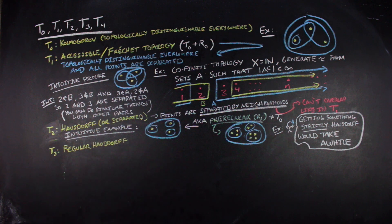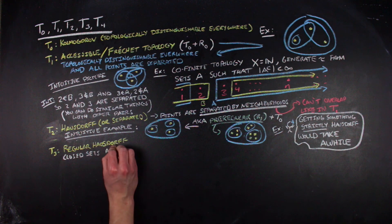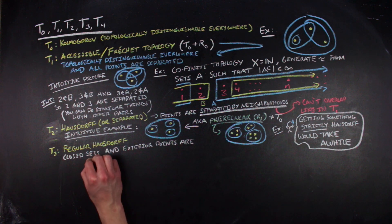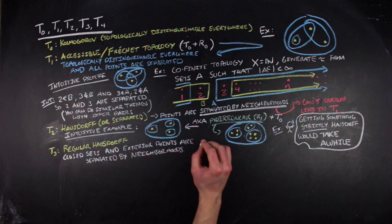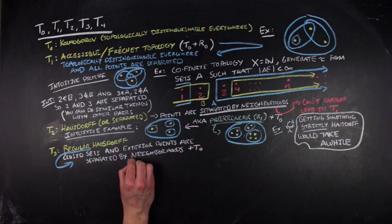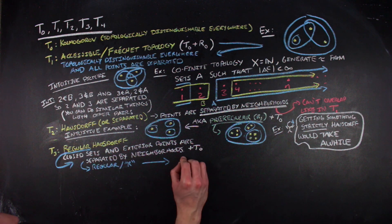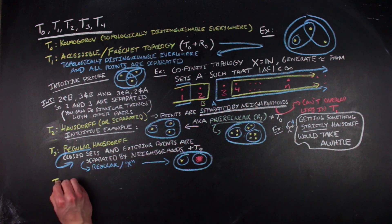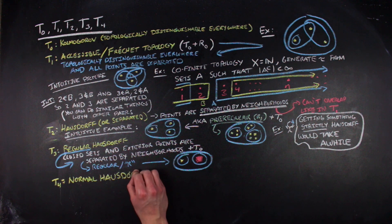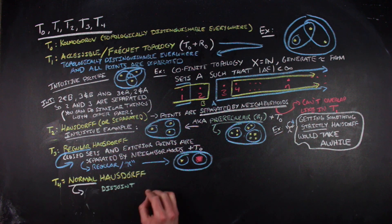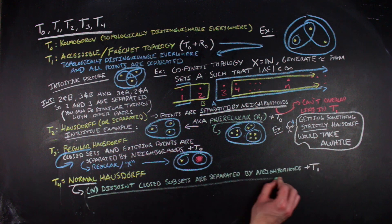The next separation axiom is T3, which is a regular Hausdorff space. In these spaces, points that are exterior from closed sets and those corresponding closed sets are separated by neighborhoods, and these are also Kolmogorov spaces. Lastly, to fill out the first five separation axioms, T4 is a normal Hausdorff space — a space where disjoint closed subsets are separated by neighborhoods — and it's also an accessible space.